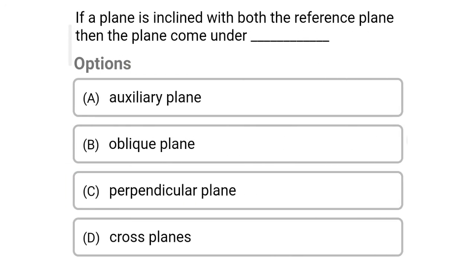Next question: if a plane is inclined with both reference planes, the plane comes under — Option A: auxiliary plane. Option B: oblique plane. Option C: perpendicular plane. Option D: cross planes. The correct answer is Option B — oblique plane. We will see more in the next video. Thank you.